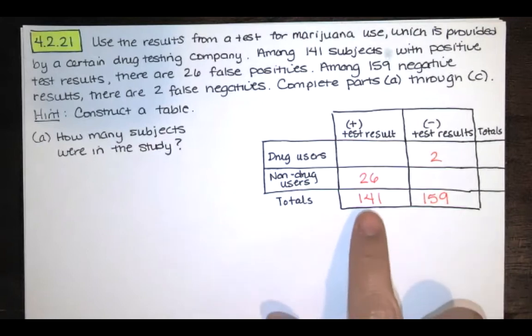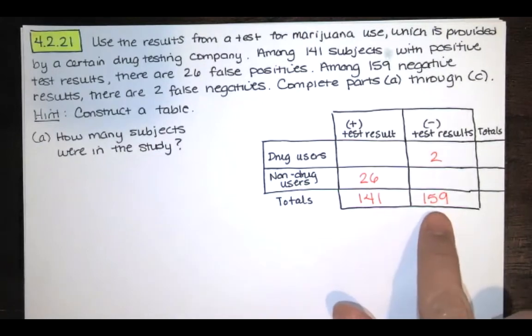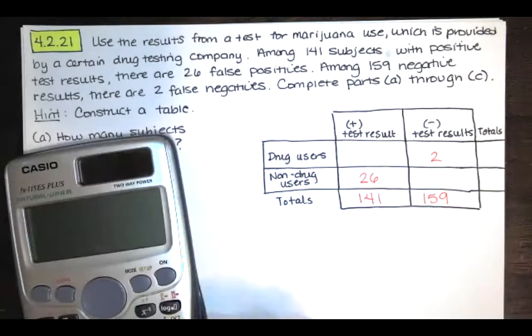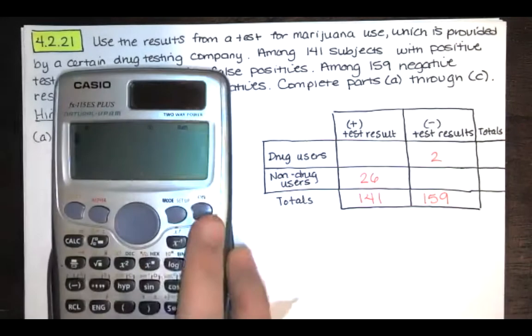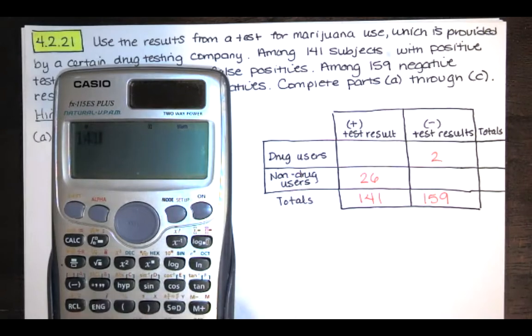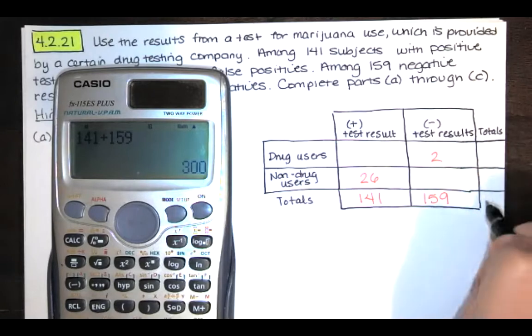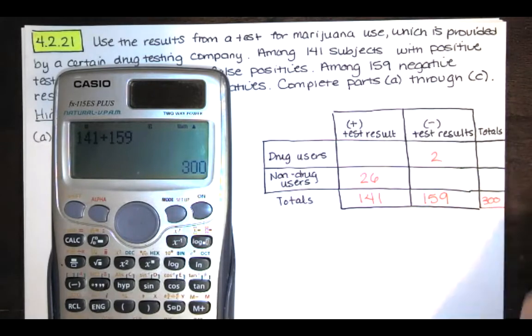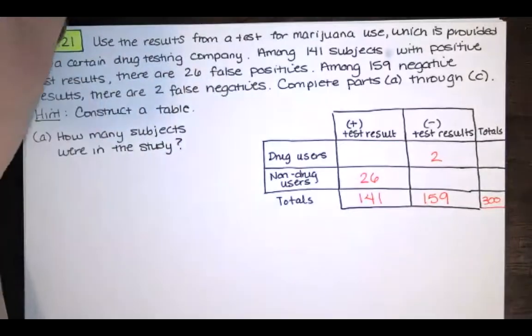Well, we know that there were 141 positive test results total and 159 negative test results total. So if we add those together, we're going to get all of the test results in our study. This is the same as the number of subjects in our study. So I've got 141 plus 159, and that's 300. So it looks like there are 300 people in our study.